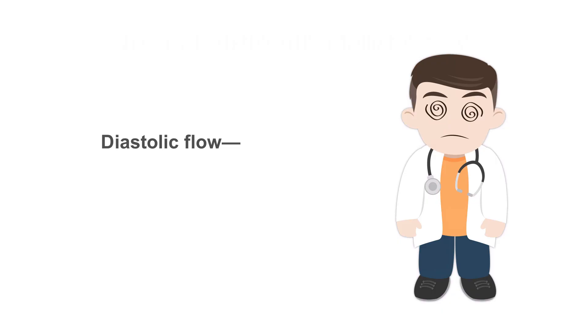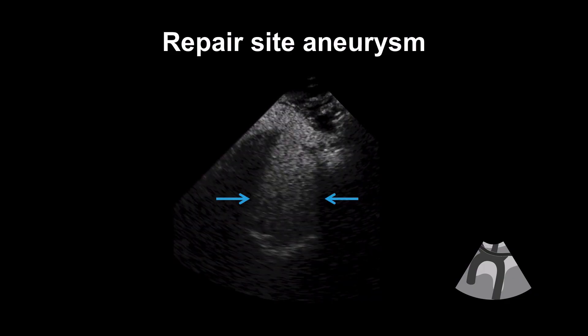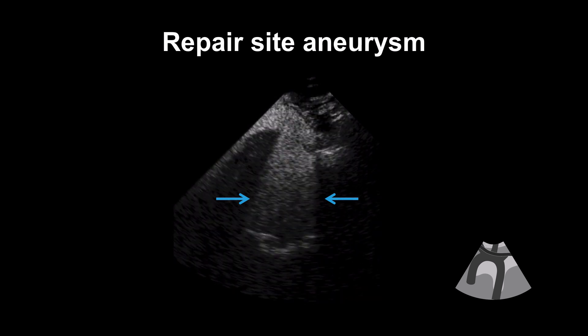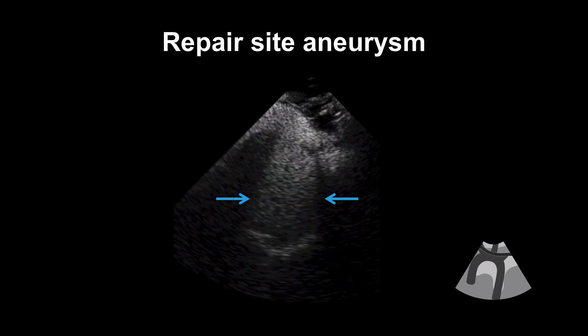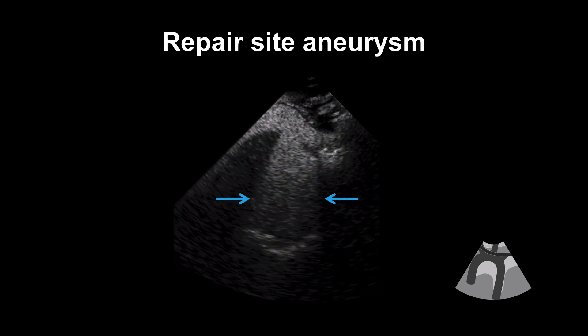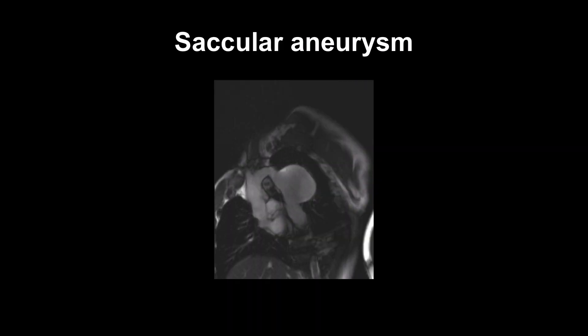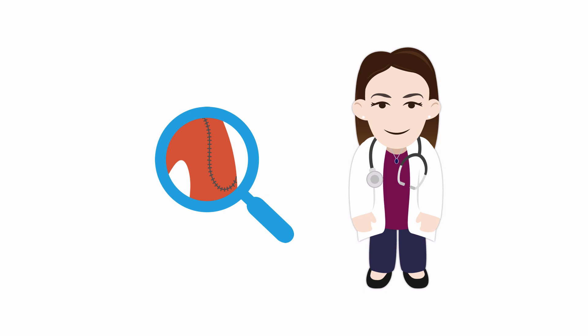So what could be causing diastolic flow in the aortic arch but not in the abdominal aorta? This might explain it: the aortic arch enhanced with ultrasound contrast shows a huge aneurysm at the repair site, and MRI shows it beautifully. The diastolic flow on the Doppler trace was blood swirling around within the saccular aneurysm. Coarctations can be repaired but shouldn't be forgotten — the various types of repairs work really well in the majority of patients, but the complications are well described.